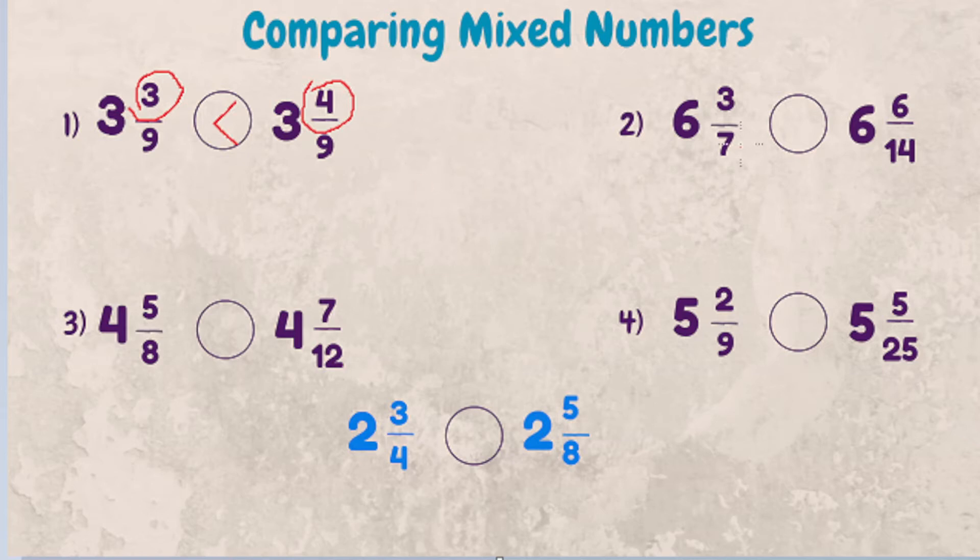Now you won't always have that where the denominators are the same. So let's look at the second example. Our whole numbers are the same, both are six. So let's isolate three sevenths and six fourteenths. We can use cross multiplication to see which one is larger. First thing we want to do with cross multiplication is multiply the numerator of one fraction times the denominator of the second fraction and then vice versa. So three times fourteen is forty-two. Seven times six is forty-two. Forty-two equals forty-two, so these two mixed numbers are actually equal.